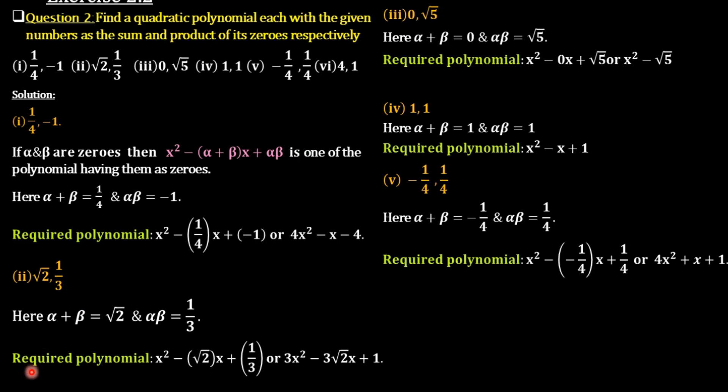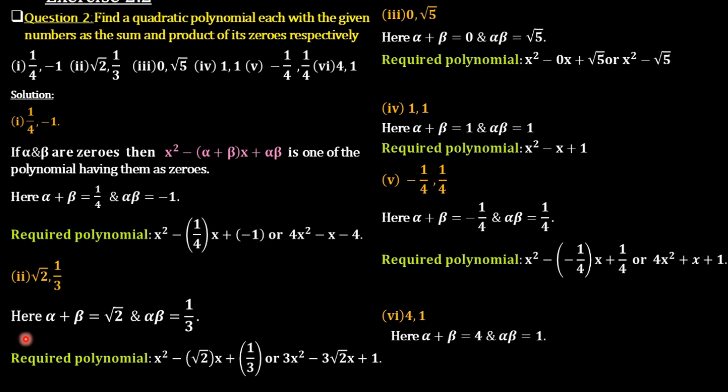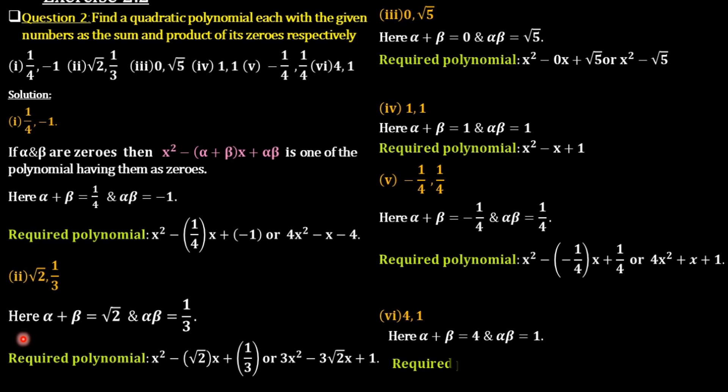Next question: 4 comma 1. Alpha plus beta equals 4 and alpha·beta equals 1. The required polynomial is x² minus 4x plus 1.